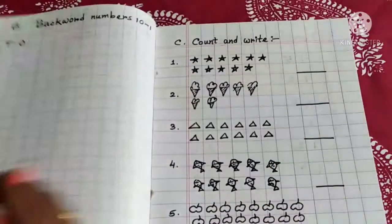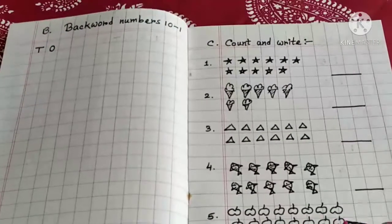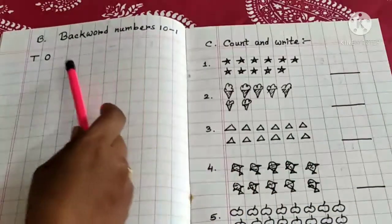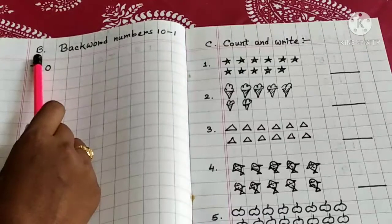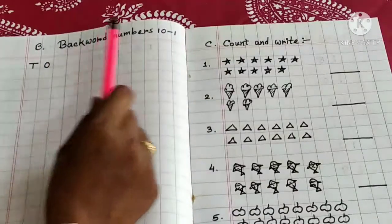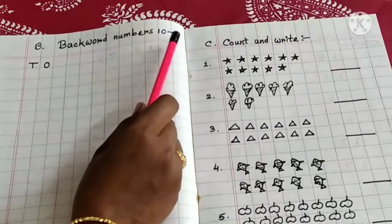In the next page, you will write question number B, backward numbers 10 to 1.